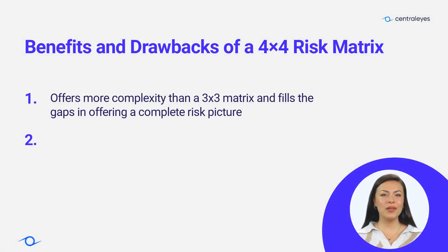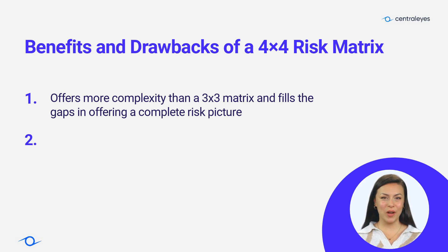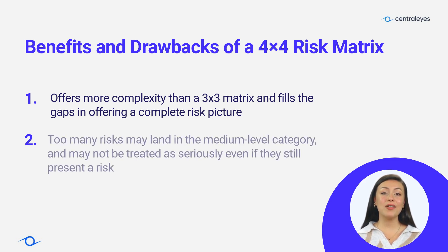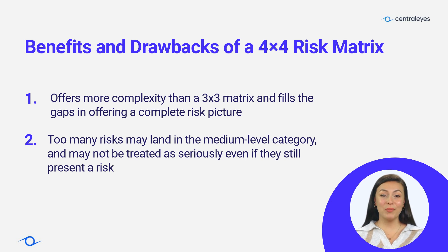The 4x4 risk matrix offers more complexity than a 3x3 matrix. Where a 3x3 matrix falls short in offering a complete risk picture, a 4x4 matrix fills in some of the blanks. Some argue that too many risks may land in the medium-level category and may not be treated as seriously, even if they still present a risk. To learn more, visit centralized.com.